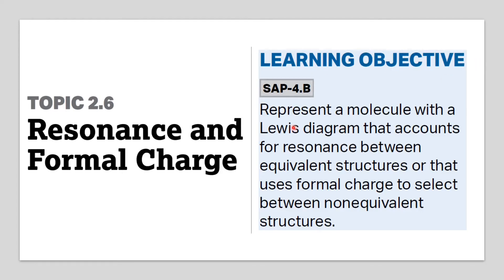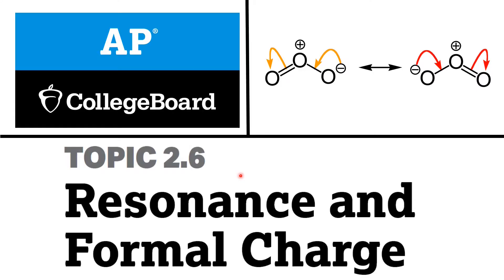The learning objective of this topic is to represent a molecule with a Lewis diagram that accounts for resonance between equivalent structures, or that uses formal charge to select between non-equivalent structures. In topic 2.5, we saw how to draw a Lewis diagram for a molecule. Here in topic 2.6, Resonance and Formal Charge from AP Chemistry College Board, we will see what is meant by equivalent and non-equivalent structures, resonance, and formal charge.